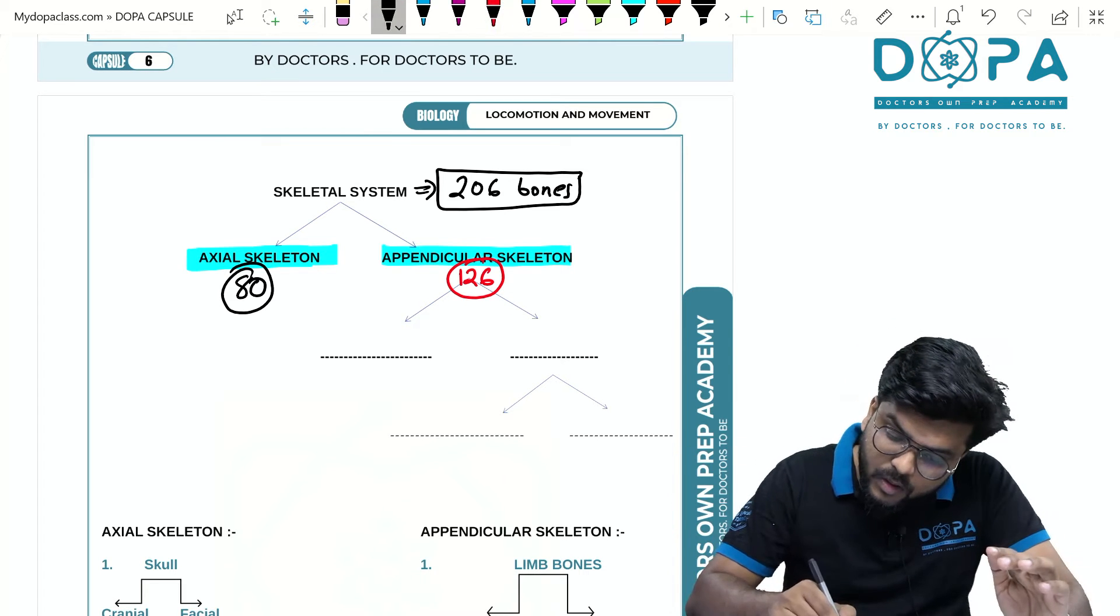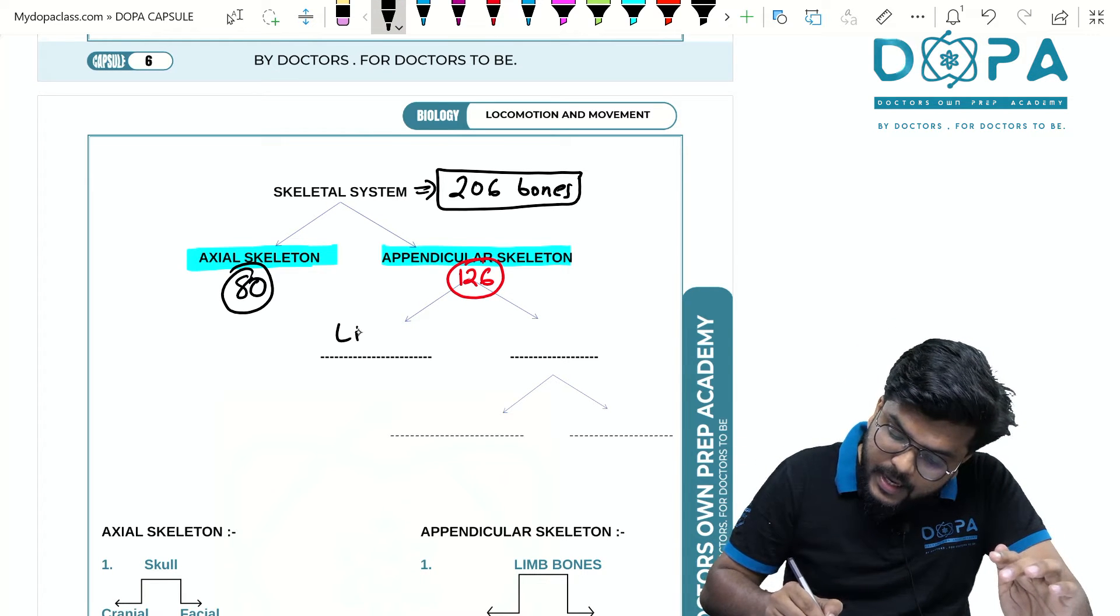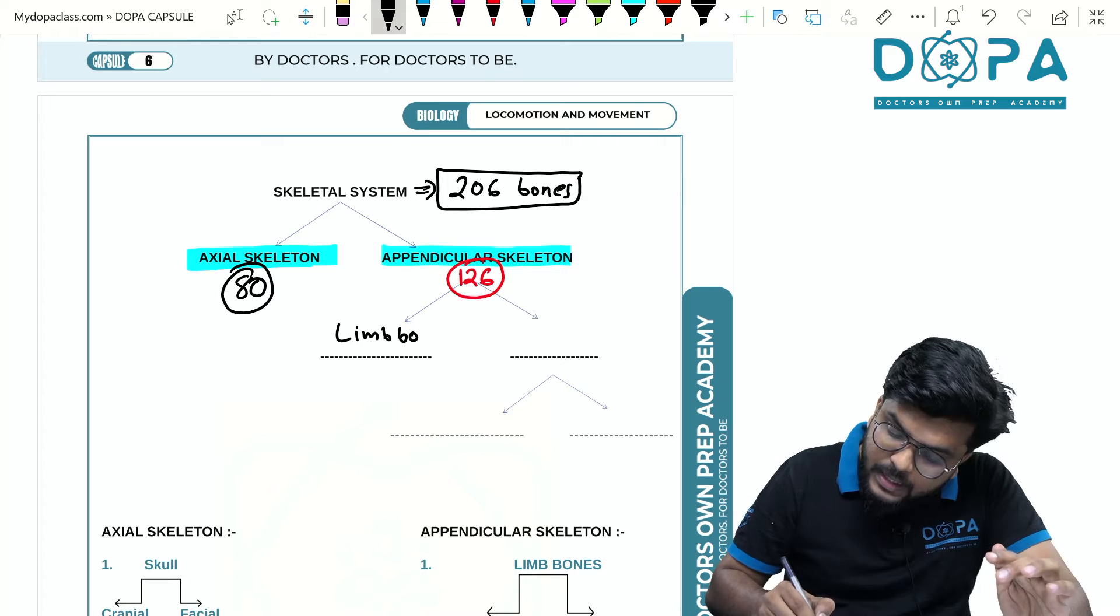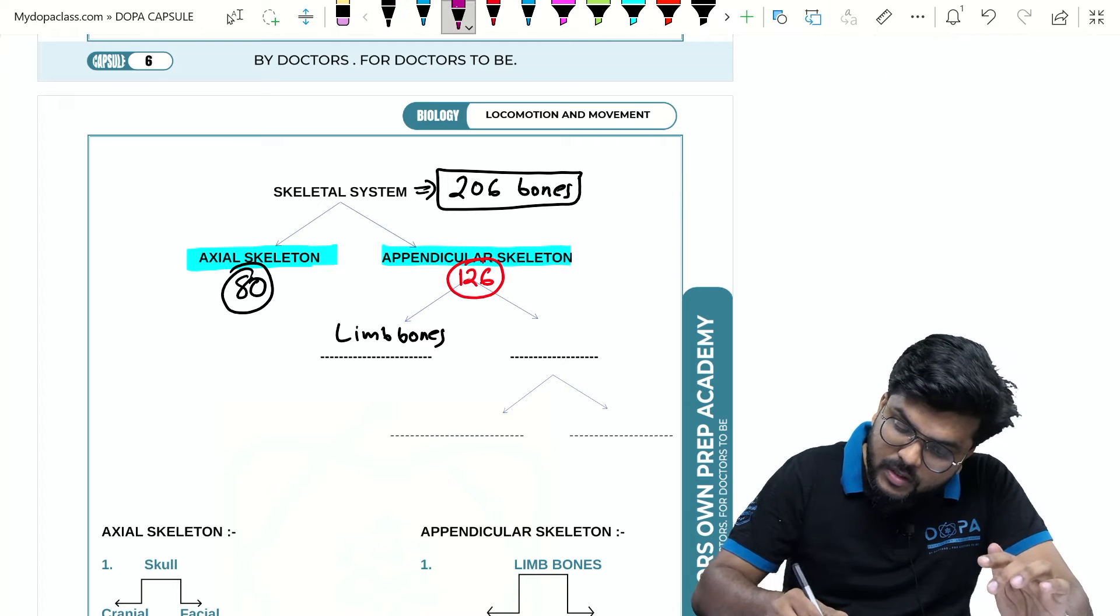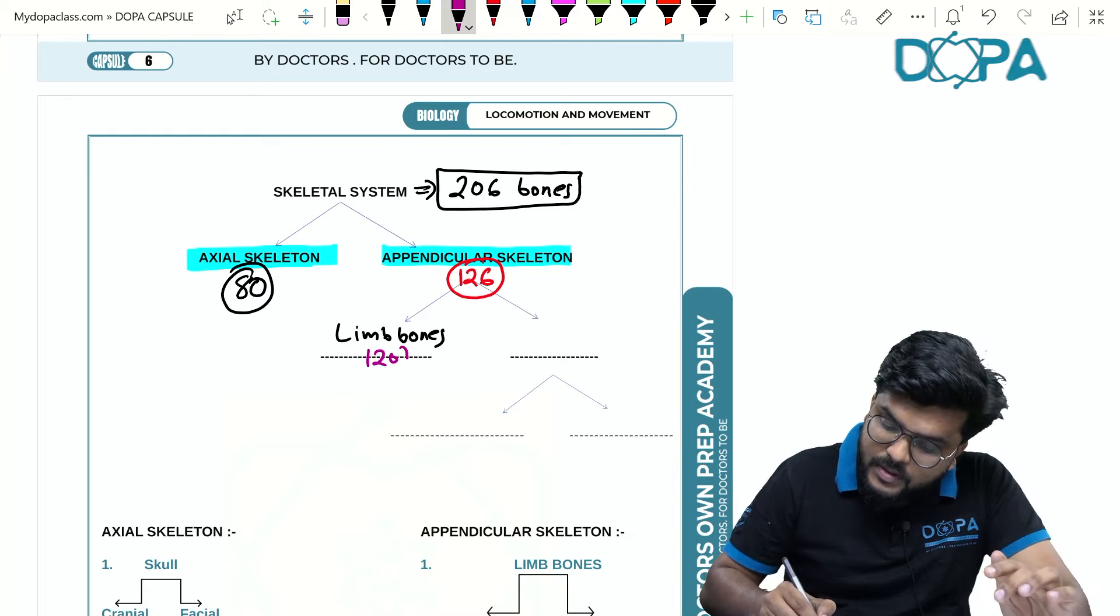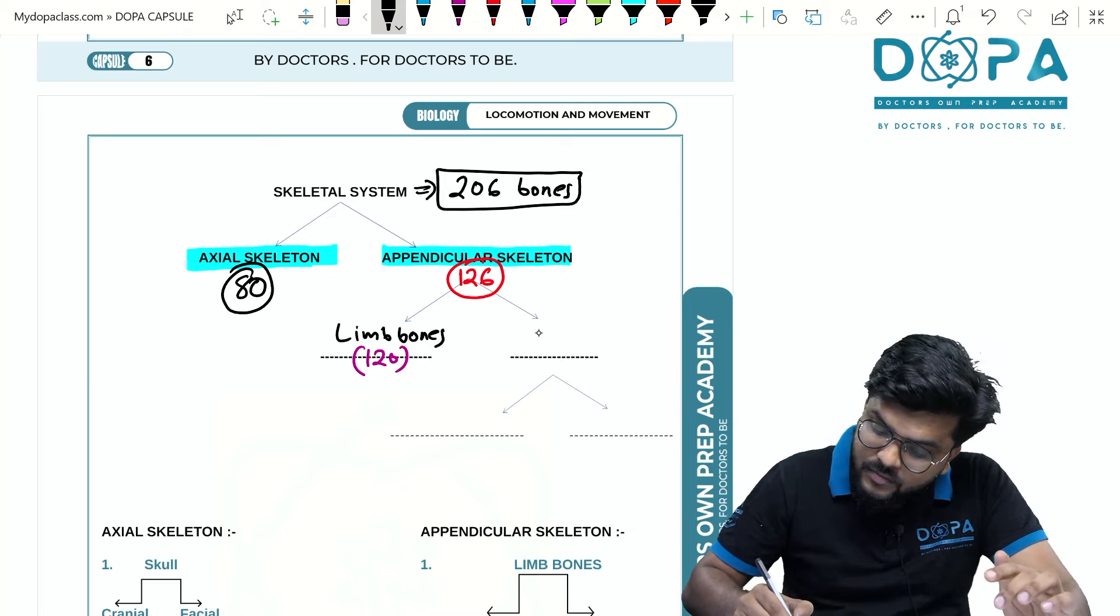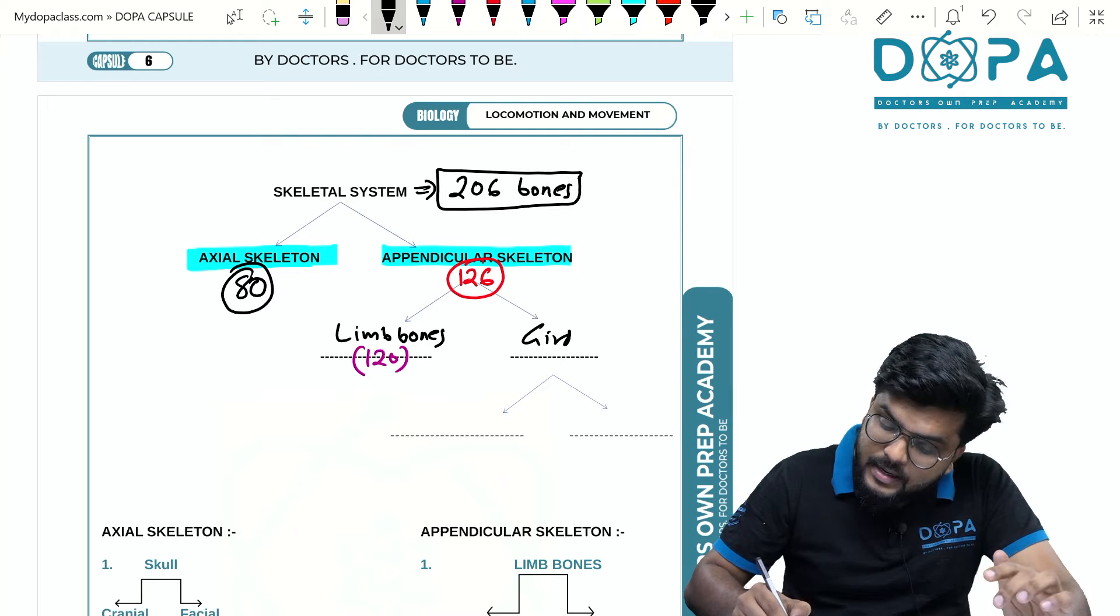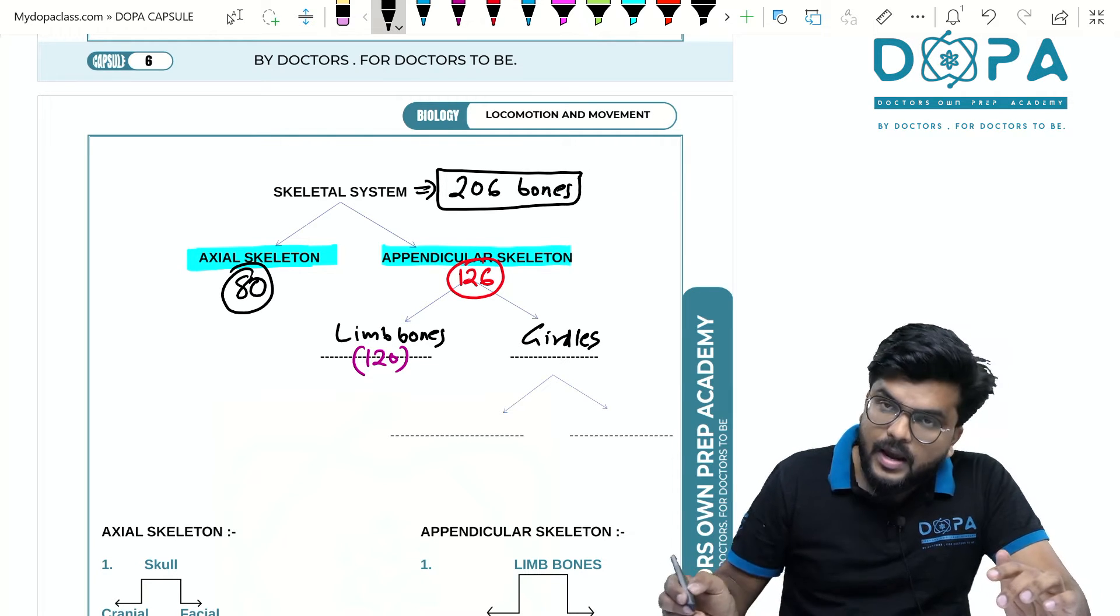We mainly have limb bones in which totally 120 bones are there. We also have another classification called girdles or girdle bones.